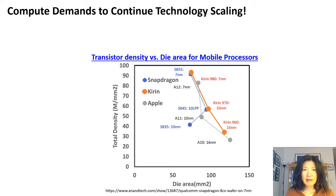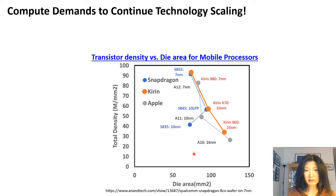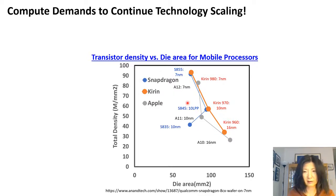Compute demand has been increasing substantially even before COVID. COVID accelerates and changes the direction a little bit, but it's not new. What you see here is die area versus transistor density. The transistor die area goes down and depending on functionality, it can go up a little bit if you want to add more functions. But the general trend is that die gets smaller and total transistor density goes up.